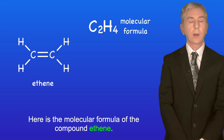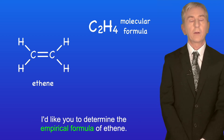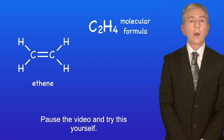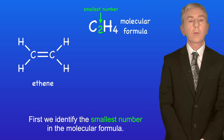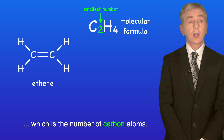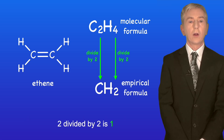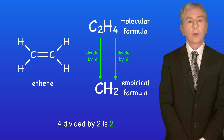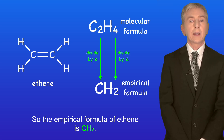Here's the molecular formula of the compound ethene. I'd like you to determine the empirical formula of ethene, so pause the video and try this yourself. First we identify the smallest number in the molecular formula — in this case the smallest number is two, which is the number of carbon atoms. We now divide all the numbers by the smallest number: two divided by two is one and four divided by two is two. So the empirical formula of ethene is CH2.